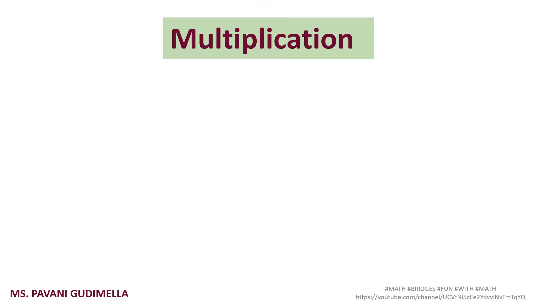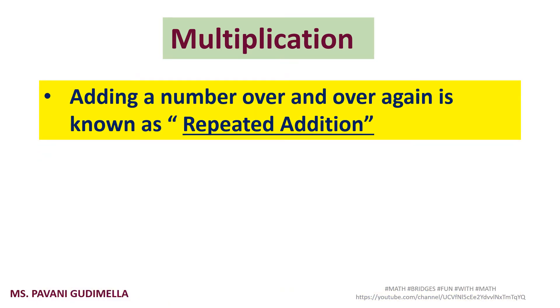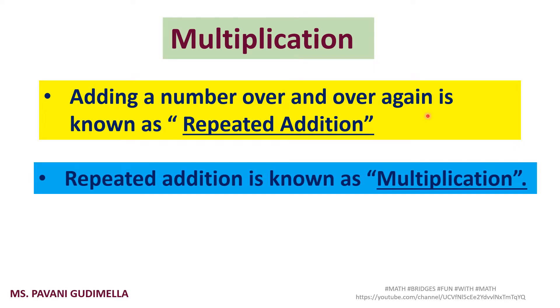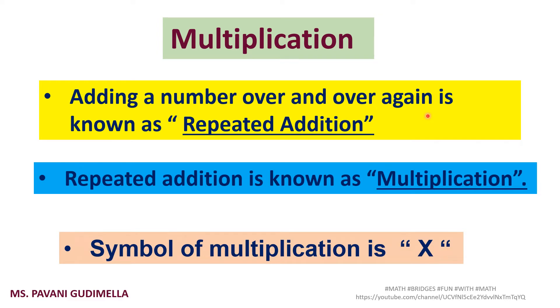Before we learn about the examples, let's see the basic terminology. What do we mean by repeated addition? Adding a number over and over again is known as repeated addition. This repeated addition is also known as multiplication. The symbol for multiplication is a cross x mark. If somebody is asking what is the definition of multiplication, it should be repeated addition. Let's see a few examples based on this.